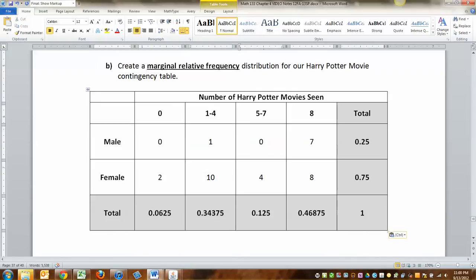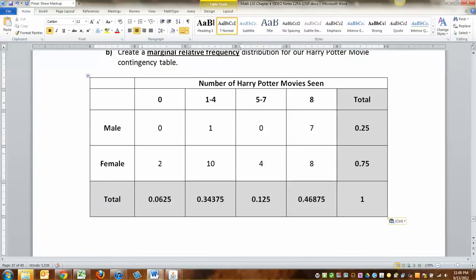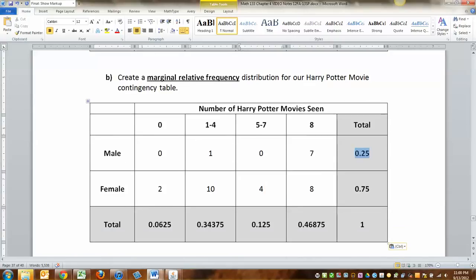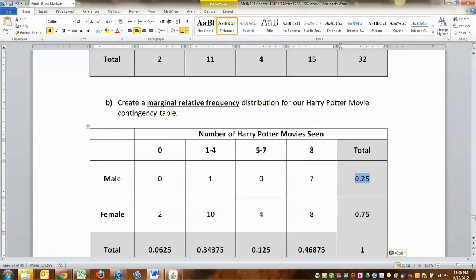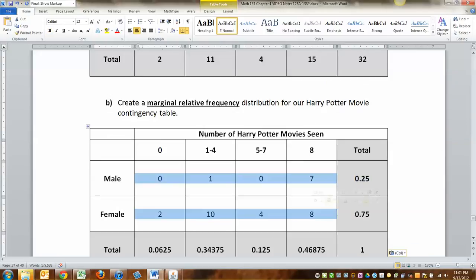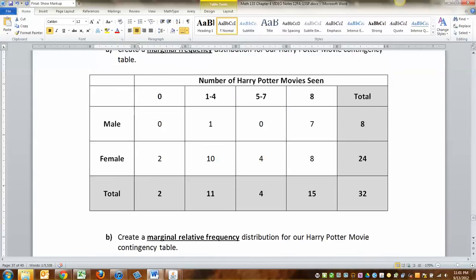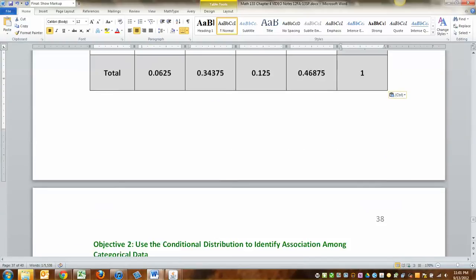You found the marginal frequency and the marginal relative frequency. Now think about what this means. You now know that 25% of that class was male. You wouldn't necessarily have known that just looking at the raw numbers. Not without doing some calculations. You now know that 47% of the people in that room have seen all eight movies. Only 6.25% have seen none of the movies. That's what that marginal relative frequency gives you. The marginal frequency tells you there were 24 women in the room. There were eight men in the room. That kind of thing.